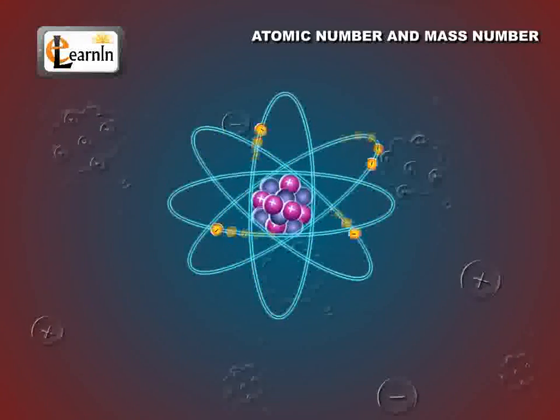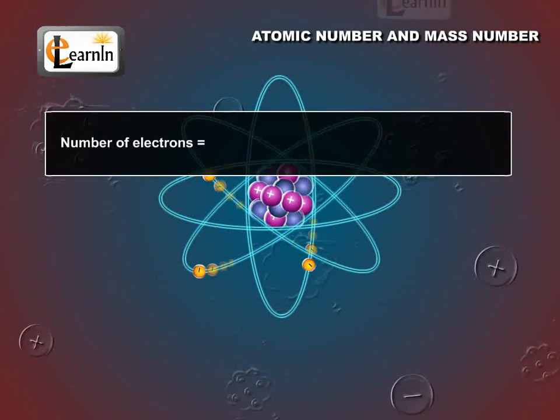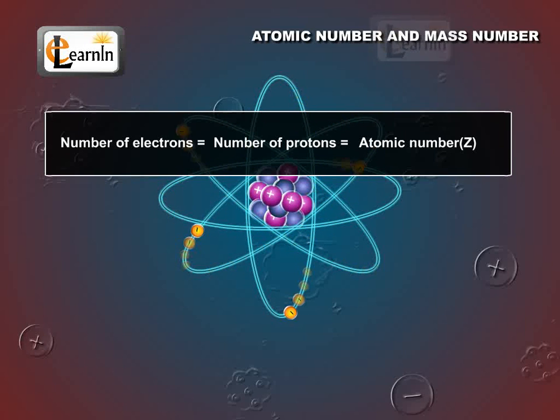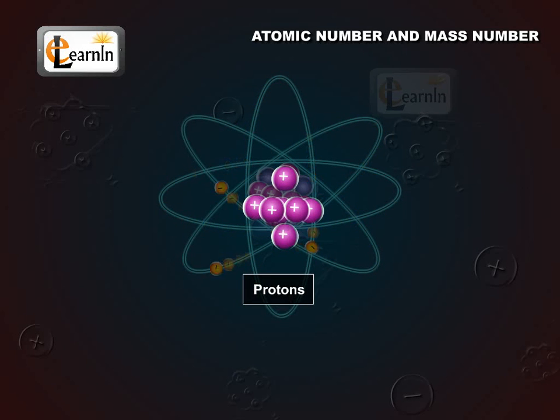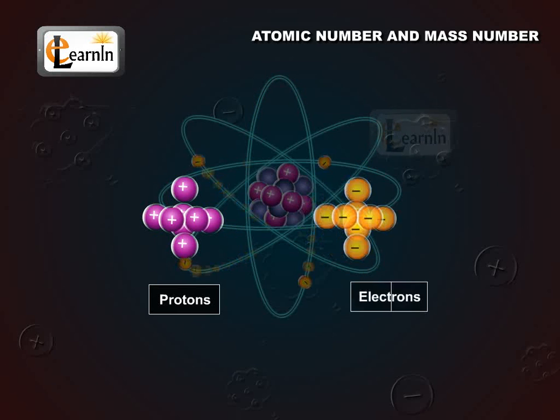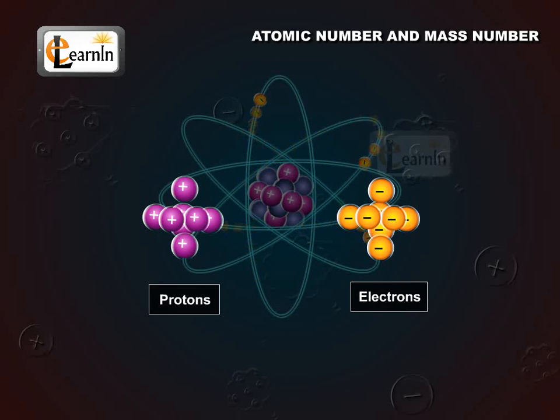In order to keep electrical neutrality, the number of electrons in an atom is equal to the number of protons, that is, the atomic number capital Z. Atomic number is equal to number of protons in the nucleus of an atom, which is equal to the number of electrons in the neutral atom.